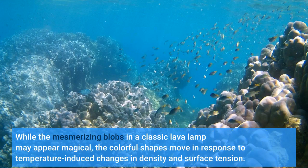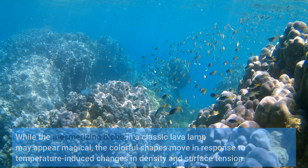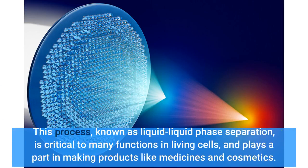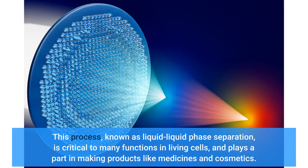While the mesmerizing blobs in a classic lava lamp may appear magical, the colorful shapes move in response to temperature-induced changes in density and surface tension. This process, known as liquid-liquid phase separation, is critical to many functions in living cells and plays a part in making products like medicines and cosmetics.